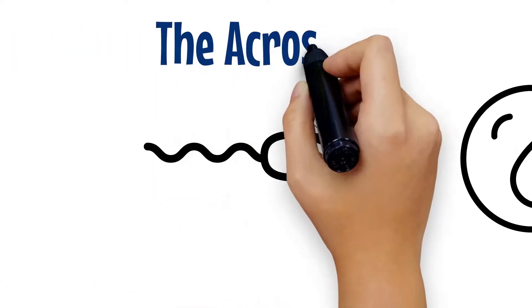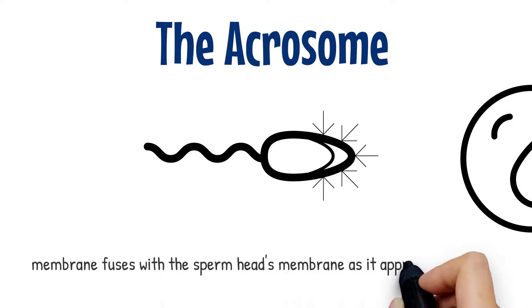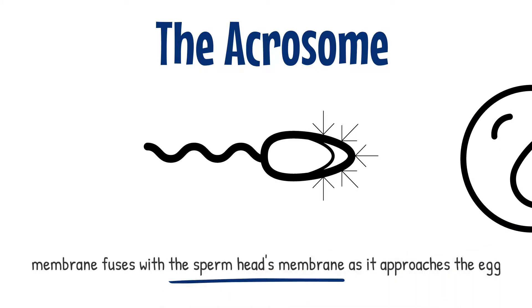As the sperm approaches the egg's protective membrane, the zona pellucida, the membrane surrounding the acrosome is able to fuse with the plasma membrane of the sperm's head and expose the contents of the acrosome.